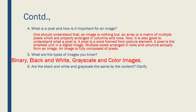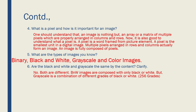Are black and white and grayscale the same type? No, both are different. Black and white images are composed only of black or white pixels. But grayscale is a combination of different shades of black or white — it can range anywhere from 0 to 255, starting with pure black and ending with pure white, with many shades in between. Black and white is purely black or white, while grayscale has multiple shades.